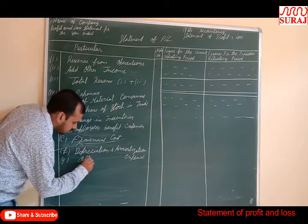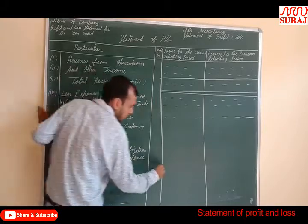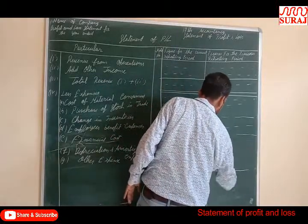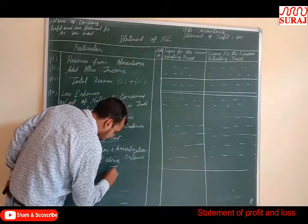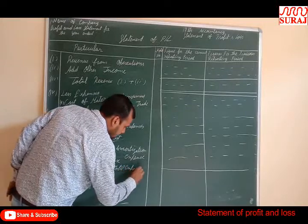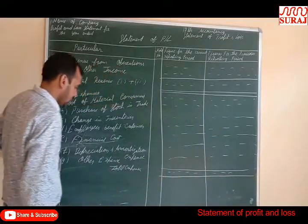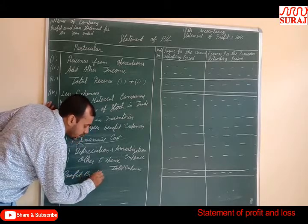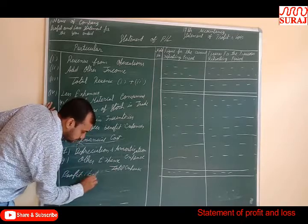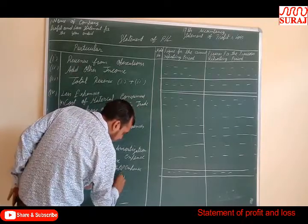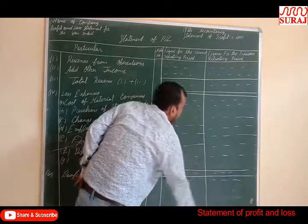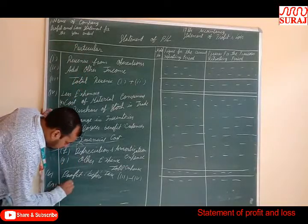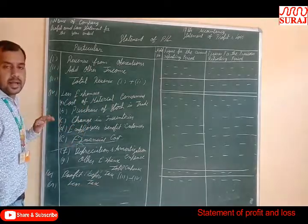Other Expenses complete the list, giving us Total Expenses. Number 5 is Profit Before Tax — this is calculated first before applying the tax rate.